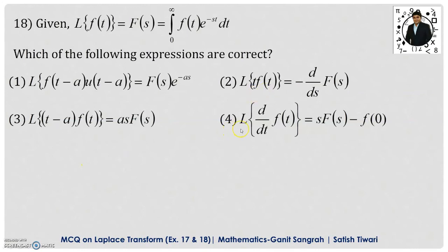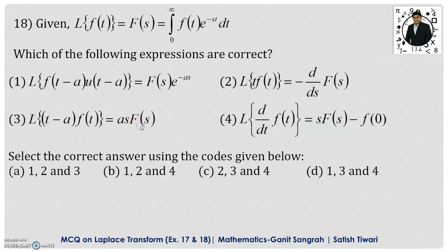If you observe the fourth one, that is Laplace transformation of d/dt of f of t, it is given as s into f of s minus f of 0. That is Laplace transformation of derivative. The formula 4 is also correct. Here option 3 is not correct. There is no such formula in the Laplace transformation and we cannot find out this quantity. So therefore we can say that options 1, 2, and 4 are correct. Therefore, option B is correct here.